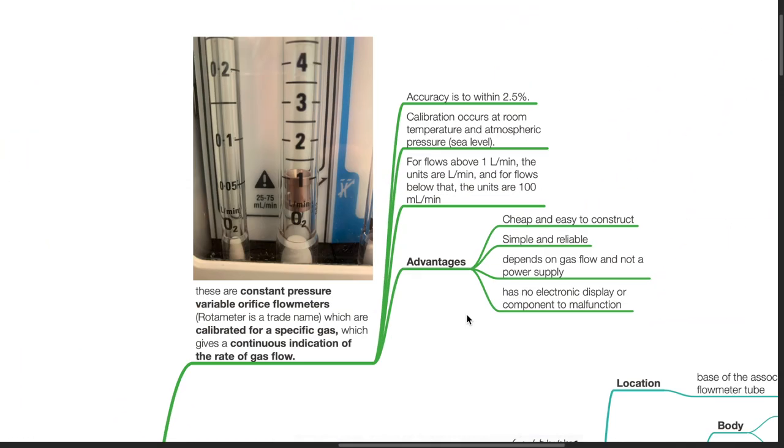These are constant pressure variable orifice flow meters which are calibrated for a specific gas, which gives a continuous indication of the rate of gas flow.